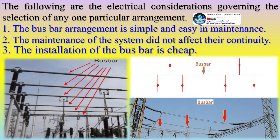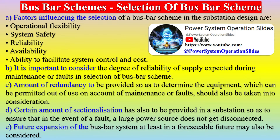Busbar schemes — selection of busbar scheme. Factors influencing the selection of a busbar scheme and the substation design are operational flexibility, system safety, reliability, availability, ability to facilitate system control, and cost. It is important to consider the degree of reliability of supply expected during maintenance or faults in the selection of a busbar scheme.